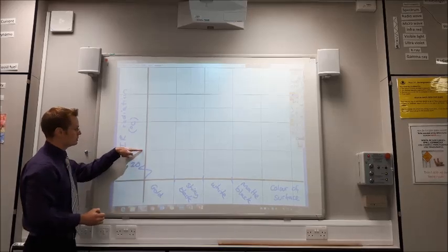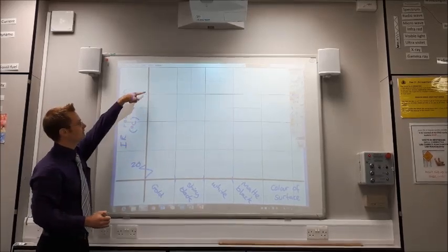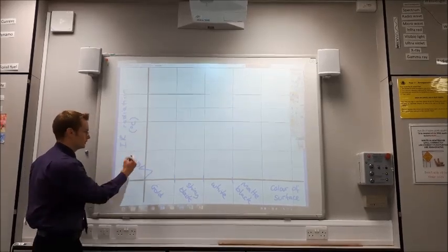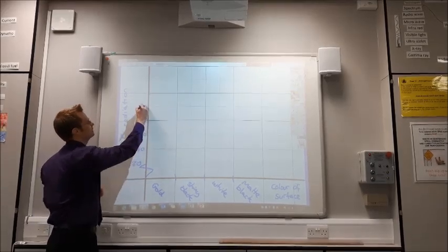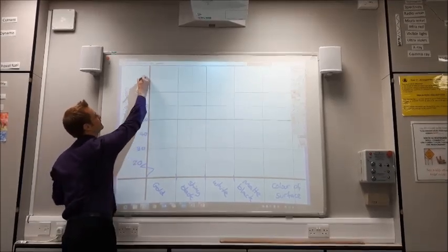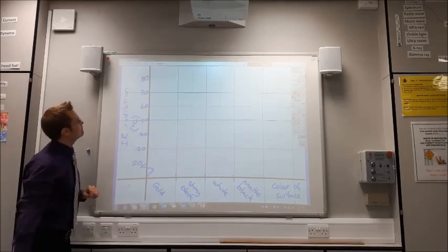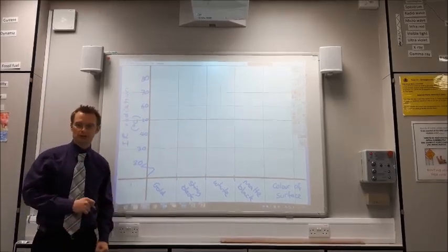You've got to make sure that each division you use goes up evenly each time. So, I'm going to go 20, 30, 40, 50, 60, 70, 80, and that means I can fit all of my points on this graph.